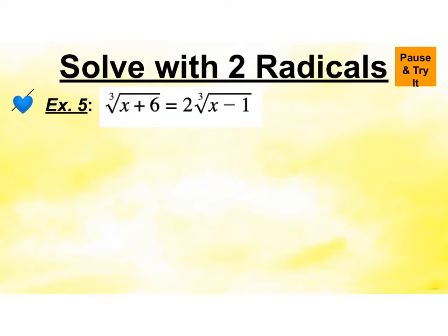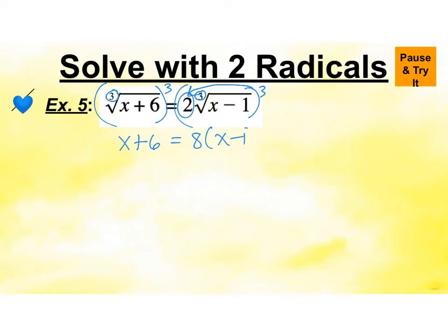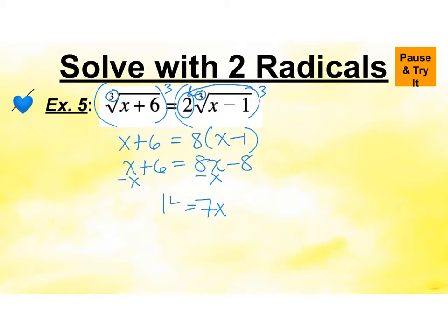Go ahead and try this one. This one has cube roots and also has the 2. There's just one term on each side so I can go ahead and cube both sides to undo the cube root. I need to make sure I'm getting that 2 cubed. So my left side becomes x plus 6, and then I have 8 times the group of x minus 1. I'm going to distribute that 8 and solve for x. Subtracting x from both sides gives 7x, adding 8 gives 14, and dividing by 7 gives x equals 2.